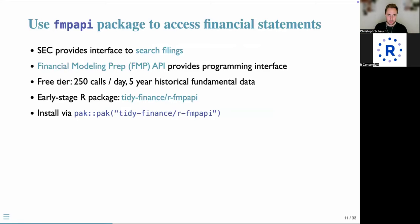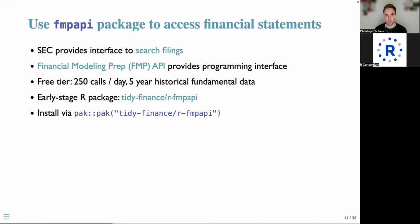Let's download this balance sheet data. There are different ways to download financial information — you could go to the SEC website and look at filings directly. But we found that the Financial Modeling Prep, or FMP API, provides a very convenient interface. They have a free tier allowing 250 API calls per day and five years of historical fundamental data — very useful for playing around with financial data. We are not affiliated with this company; it's just convenient. We also created our own early-stage R package, the tidy finance add-on, and there's also another R package you can use.